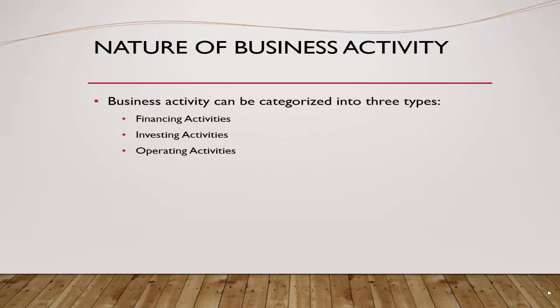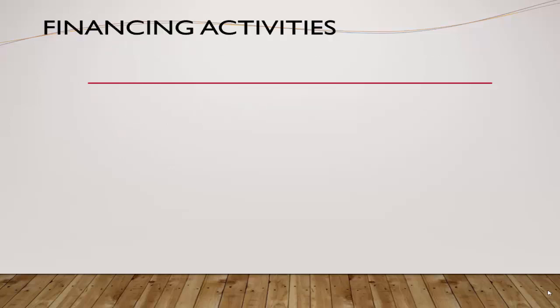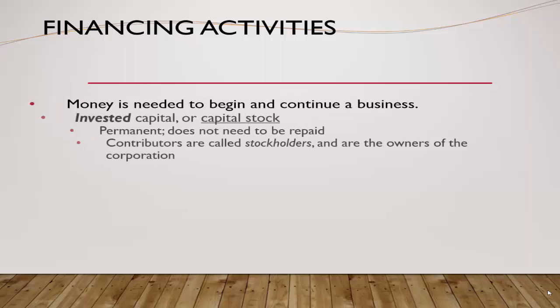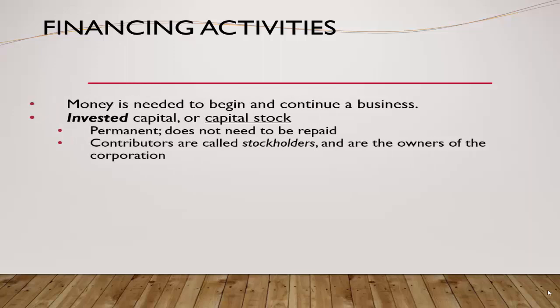The nature of business activity can be categorized into three types: financing, investing, and operating. For financing activity, money is needed to begin and continue a business. It is invested in capital stock, and it is permanent — meaning it does not need to be repaid. The contributors are called stockholders and are the owners of the corporation.